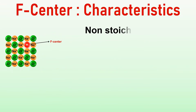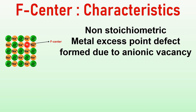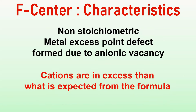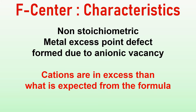Let us define what an F-center is. It is a non-stoichiometric metal excess point defect formed due to anionic vacancy. The site vacated by the anion is occupied by an electron. Since the cations are in excess compared to what is expected from the formula, it is a non-stoichiometric metal excess point defect.